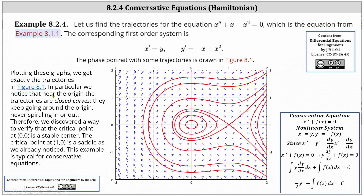In particular, we notice that near the origin, the trajectories are closed curves. They keep going around the origin, never spiraling in or out. Therefore, we've discovered a way to verify that the critical point at (0,0) is a stable center. The critical point at (1,0) here is a saddle, as we've already discussed. This example is typical for conservative equations.